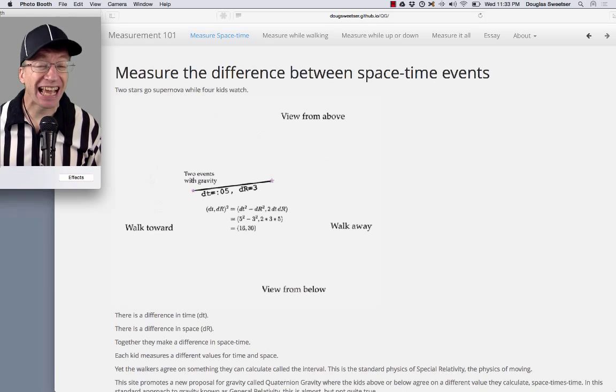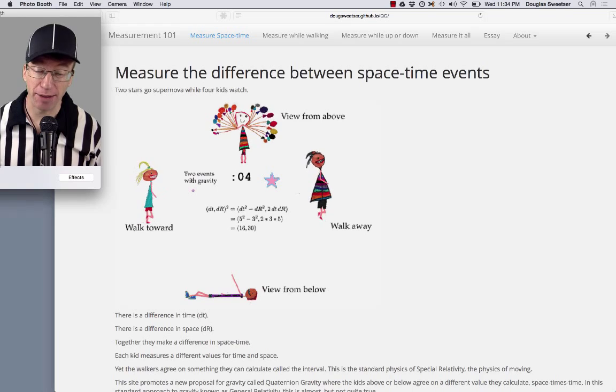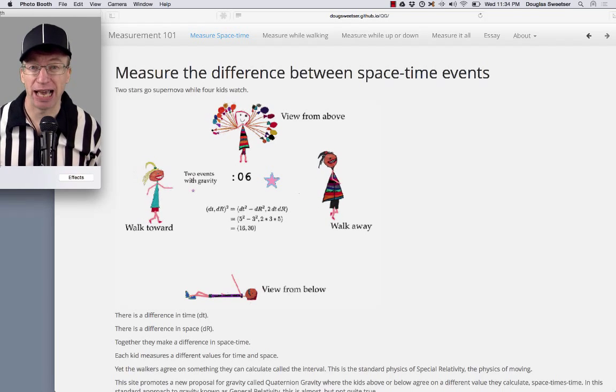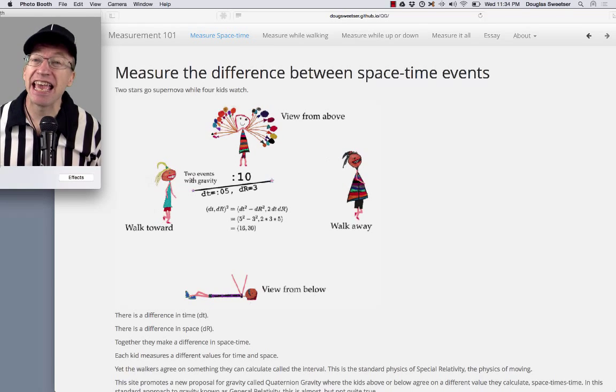Now, in 1905, Einstein proposed that space marry time to become space-time. And this is actually a hard marriage to understand, even today.